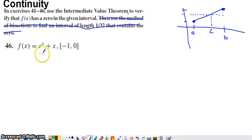So what we're asked to do here in number 46 is prove that this function has a zero on this interval. Now we want to use the intermediate value theorem in order to do this. But before we can use the intermediate value theorem we're going to have to say that our function is continuous.